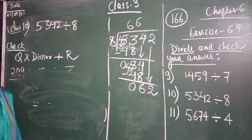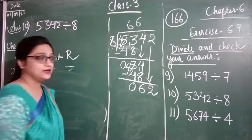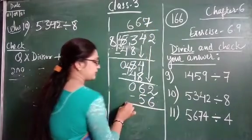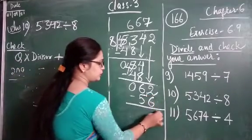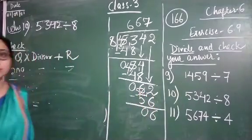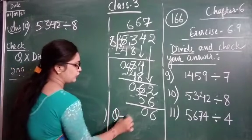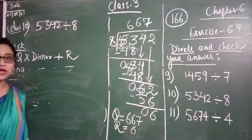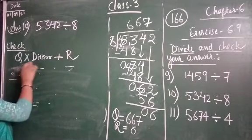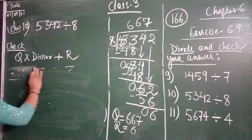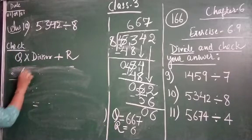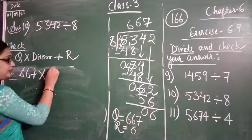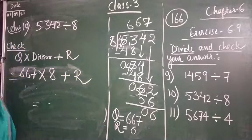The next number is 62. 62 is not in the table of 8, so we need the number less than 62. 8 sevens are 56. 12 minus 6 equals 6, and 5 minus 5 equals 0. So the quotient we got is 667 and the remainder is 6. The formula to check is: quotient × divisor + remainder. Let us put the values: quotient is 667, divisor is 8.